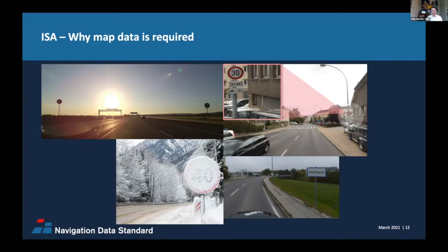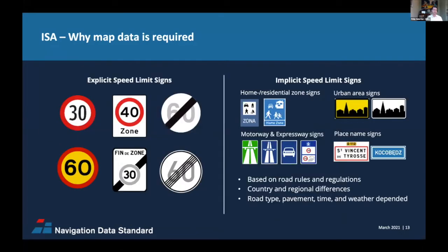Conditional signs are not part of the regulation test criteria, but they are part of the driver's user experience — and a map would typically include these. That is why NDS Association members and others in the automotive industry are sure that you need a map, because the European Union has defined a 90% success rate for test approval. Explicit speed limits can be detected by camera-based systems, but as shown, this is not always easy. Map data helps as an additional reference or sensor.